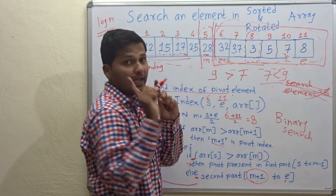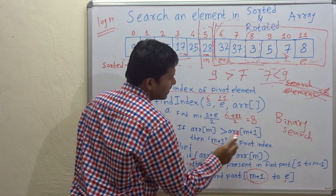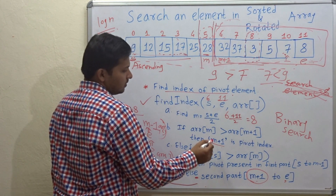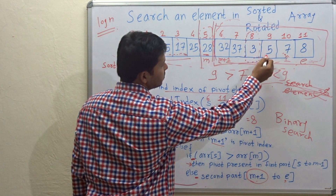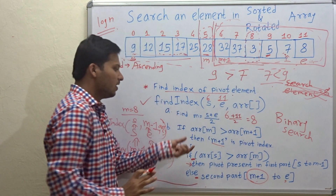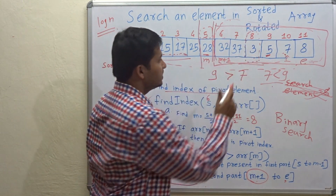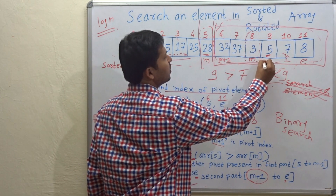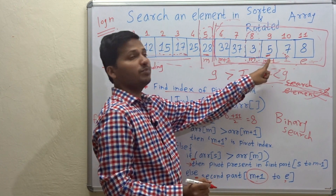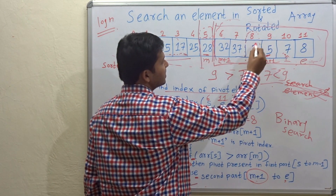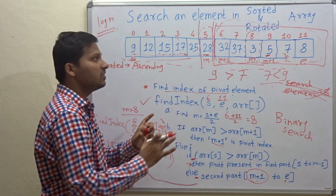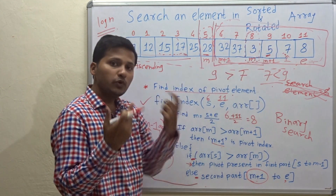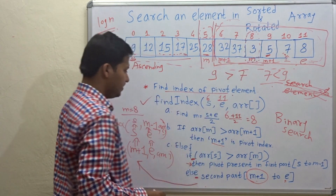Now we check if array[m] is greater than array[m+1] — is 3 greater than 5? No, it is not. So m+1 (index 9, value 5) is not a pivot element. We go to the else part. The middle index is 8, and we check whether array[m+1] is a pivot: is 3 greater than 5? No. So we go to else.